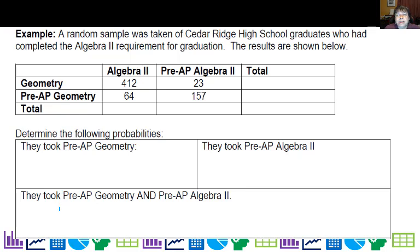So let's go ahead and look at another table of data. We have a random sample of Cedar Ridge High School graduates who had completed the Algebra 2 requirement for graduation. So if I total up my students, 412 plus 423 is 435, 64 plus 157 is 221, 476 adding this way, 180 adding this way, and if I add them up, I should pretty much match up 656 total students.